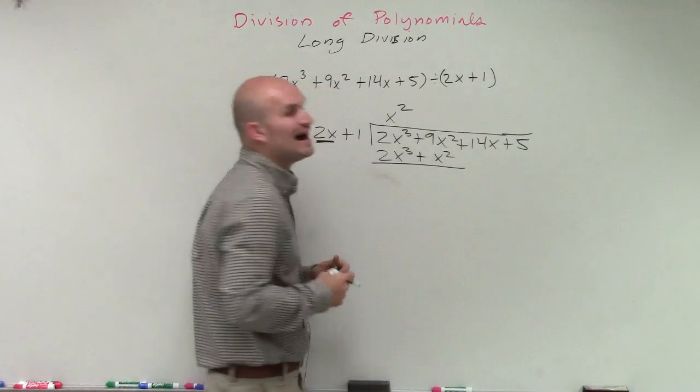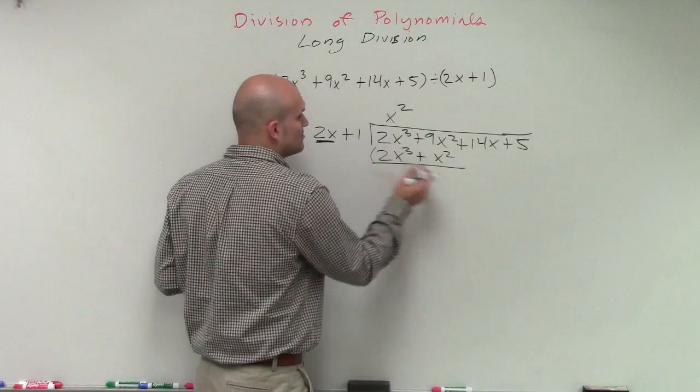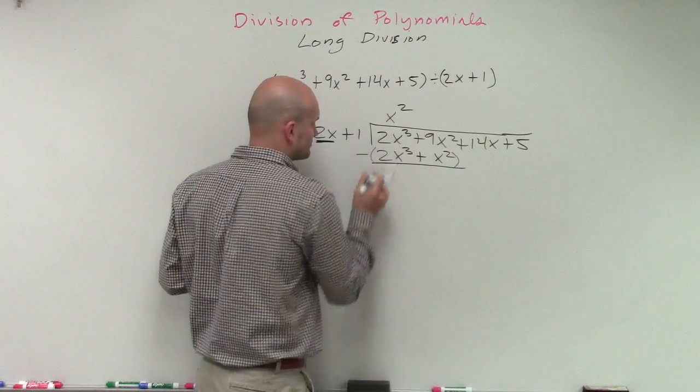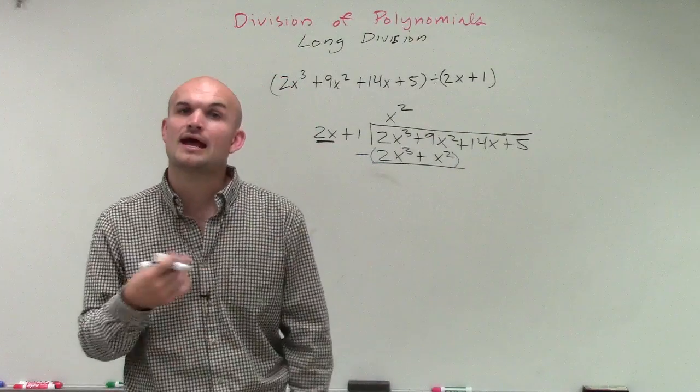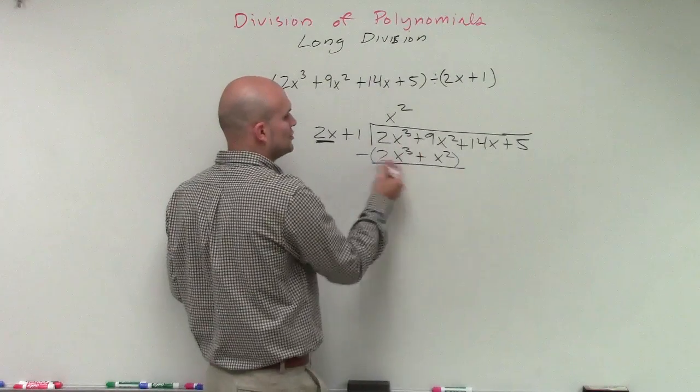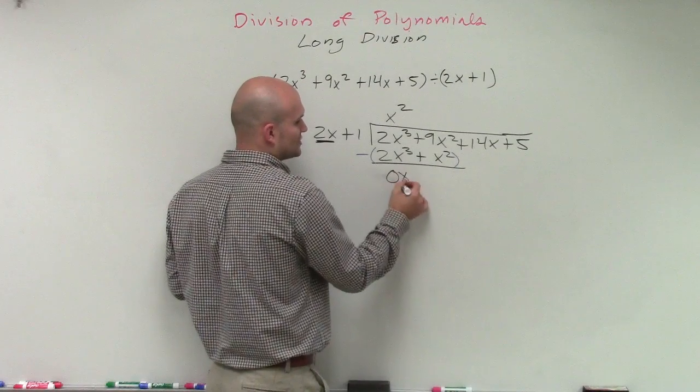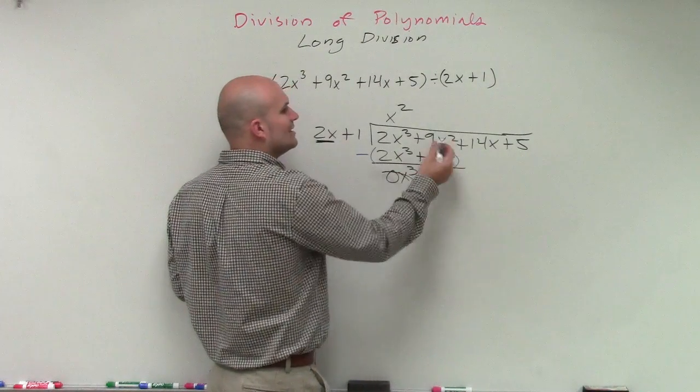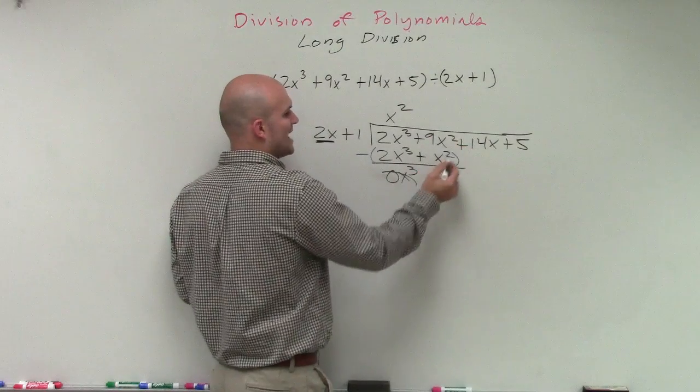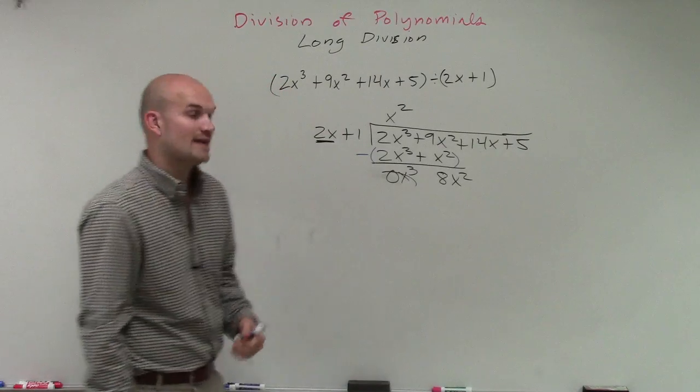Then we subtract the first two rows. Just remember, when you're subtracting, let's put them in parentheses with our subtraction sign. Therefore, 2x cubed minus 2x cubed is going to be 0x cubed, which is just 0. 9x squared minus x squared is going to be a positive 8x squared.